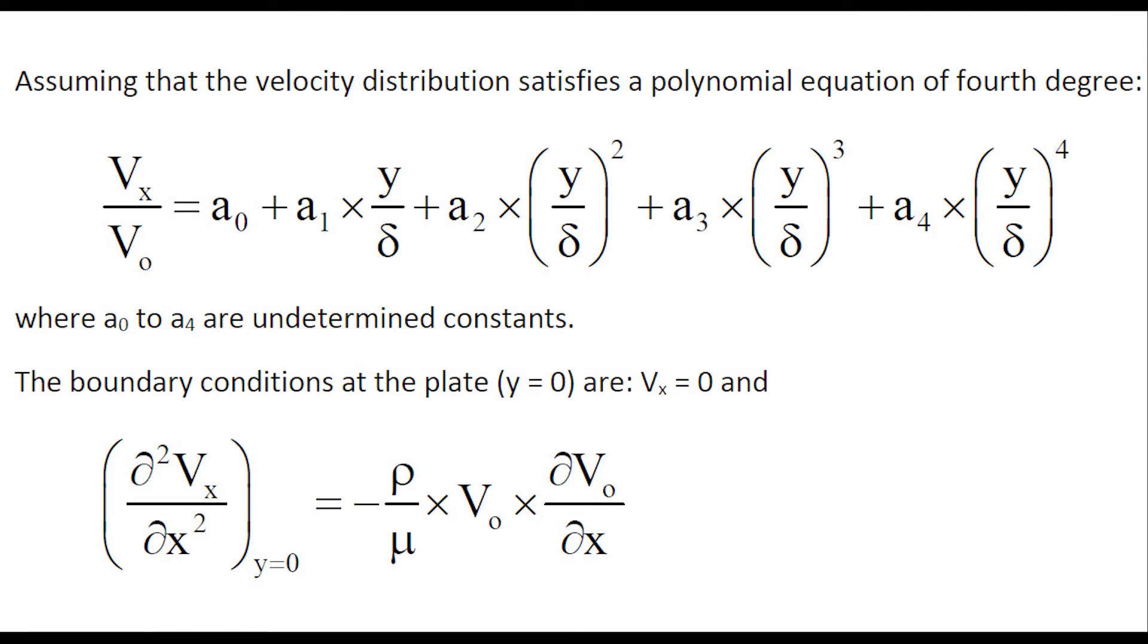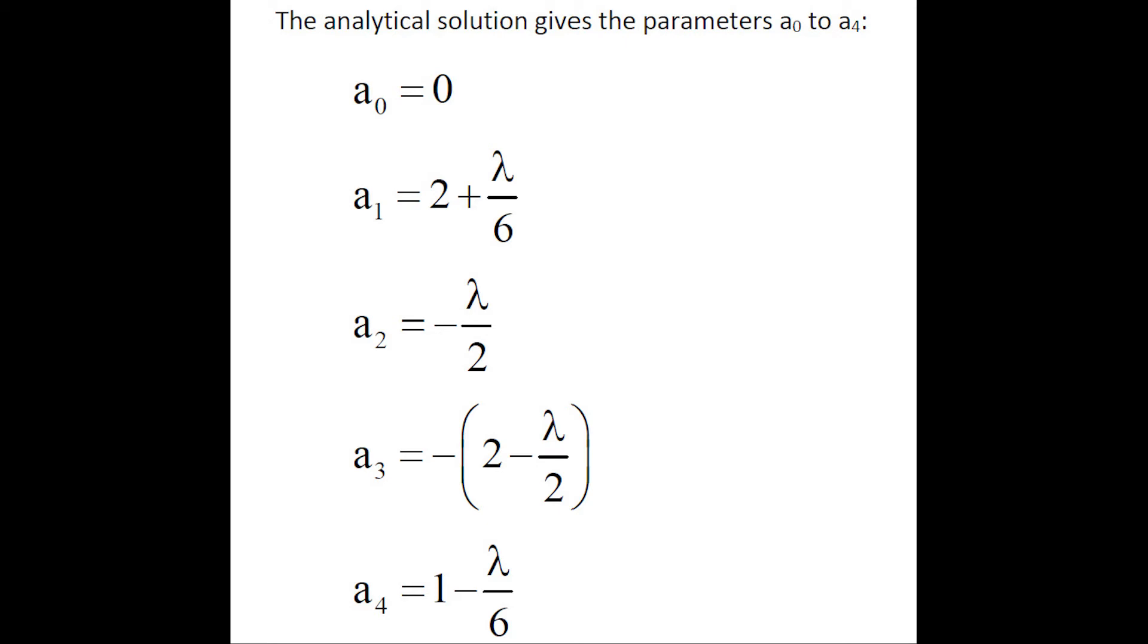Assuming that the velocity distribution satisfies a polynomial equation of 4th degree, the boundary condition at the plate is vx equals 0, and another boundary condition in terms of the second derivative is shown here. The analytical solution of this problem gives the following parameters of the velocity distribution from a0 to a4.